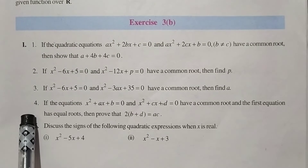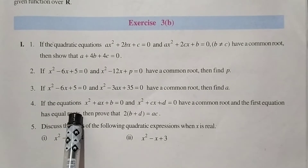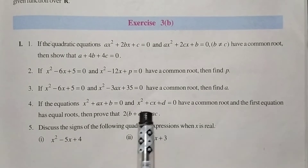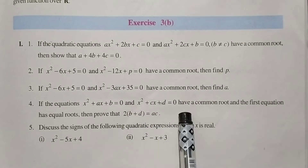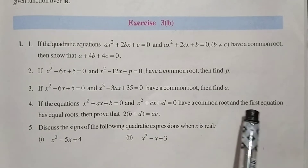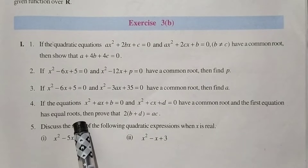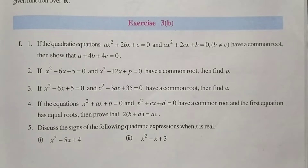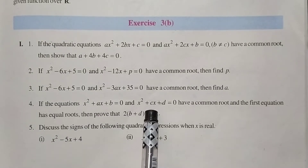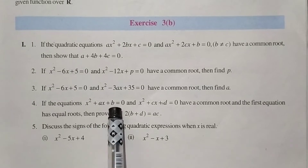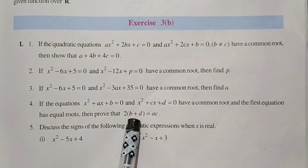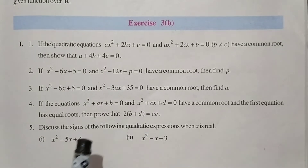In this video we will solve the fourth question: if the equations x² + ax + b = 0 and x² + cx + d = 0 have a common root, and the first equation has equal roots, then we need to prove that 2(b + d) = ac. The question says these two equations have a common root and this equation has equal roots.